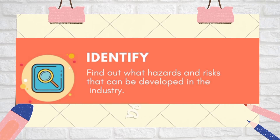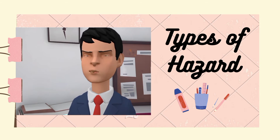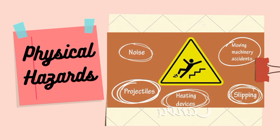For nothing to be affected, the first thing we must do is identify — find out the hazards and risks that can be developed in the industry. These are some types of hazards. First, physical hazards. A physical hazard is an agent, factor, or circumstance that can cause harm with contact. They can be classified as a type of occupational hazard or environmental hazard. Physical hazards include ergonomic hazards, radiation, heat and cold stress, vibration hazards, and noise hazards.